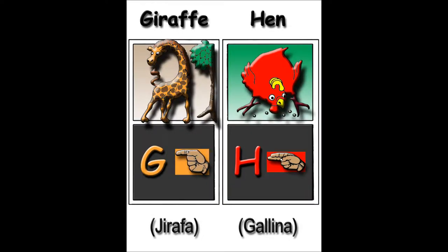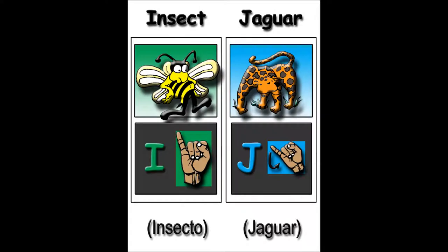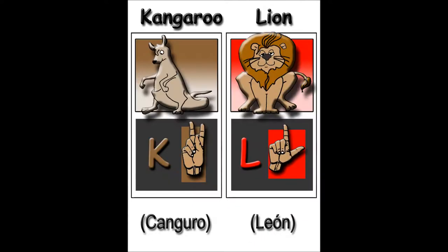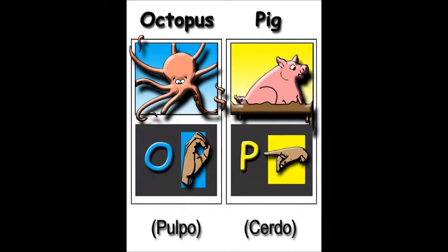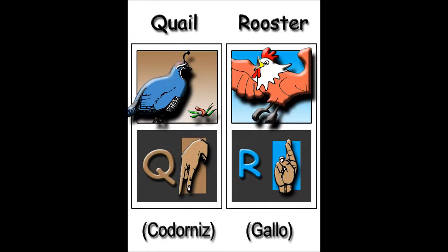G is for the giraffe. H is for the hen. I is for the insect flying in the wind. J is for the jaguar. K for kangaroo. L is for the lion inside the zoo. M is for the monkey and N is for the nanny goat. O is for the octopus floating like a boat. P is for the pig and Q is for the quail.